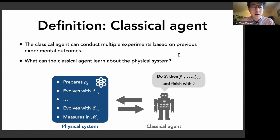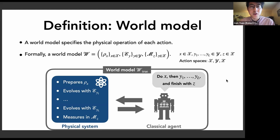The key question we want to understand is: what aspects of the physical system are actually learnable by the classical agent? For example, can a classical agent understand what kind of initial state it's creating, what kind of POVM it's creating, or are there certain aspects of the physical system that are fundamentally unknowable?